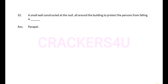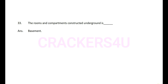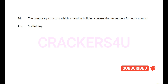Question 32: A small wall constructed at the roof all around the building to protect persons from falling is — answer: parapet. Question 33: The rooms and compartments constructed underground are — answer: basement.